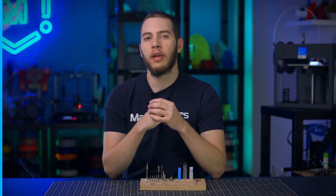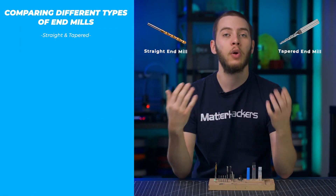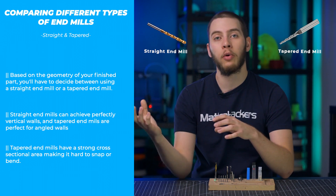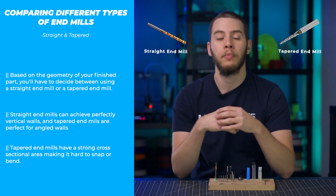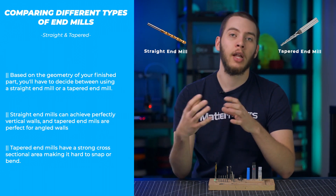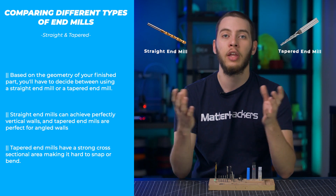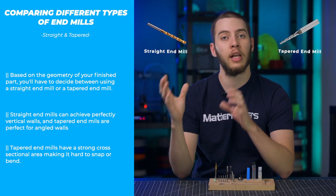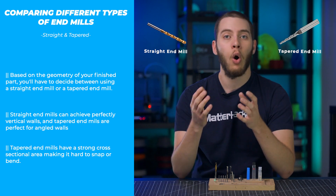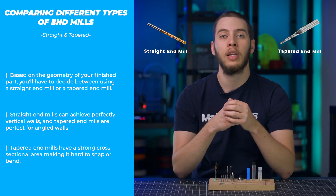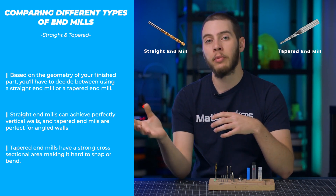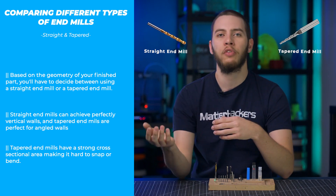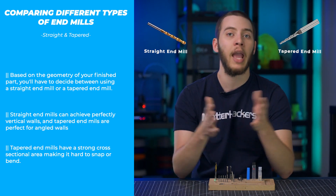There are generally two forms of end mills: straight and tapered. Each one is more efficient than the other at certain jobs, so you will want to pick one based on the geometry of your finished part. A tapered end mill has a larger cross-sectional area than a straight end mill of the same tip diameter, which means you have less of a chance of bending it or snapping it off in your workpiece. But a straight end mill is able to achieve perfectly vertical walls, whereas a tapered end mill is much more efficient at making angled walls.